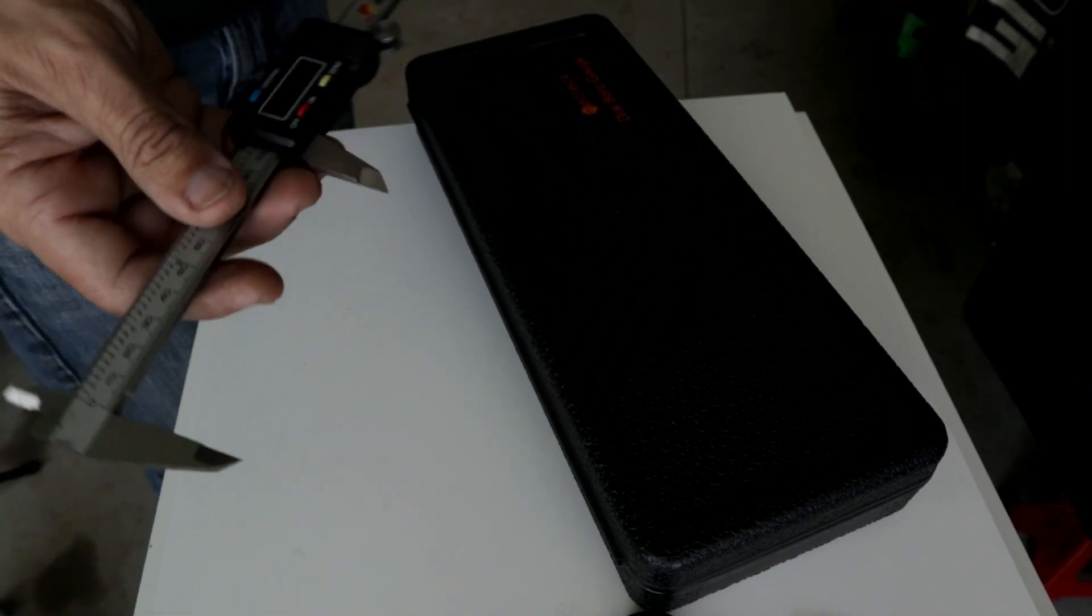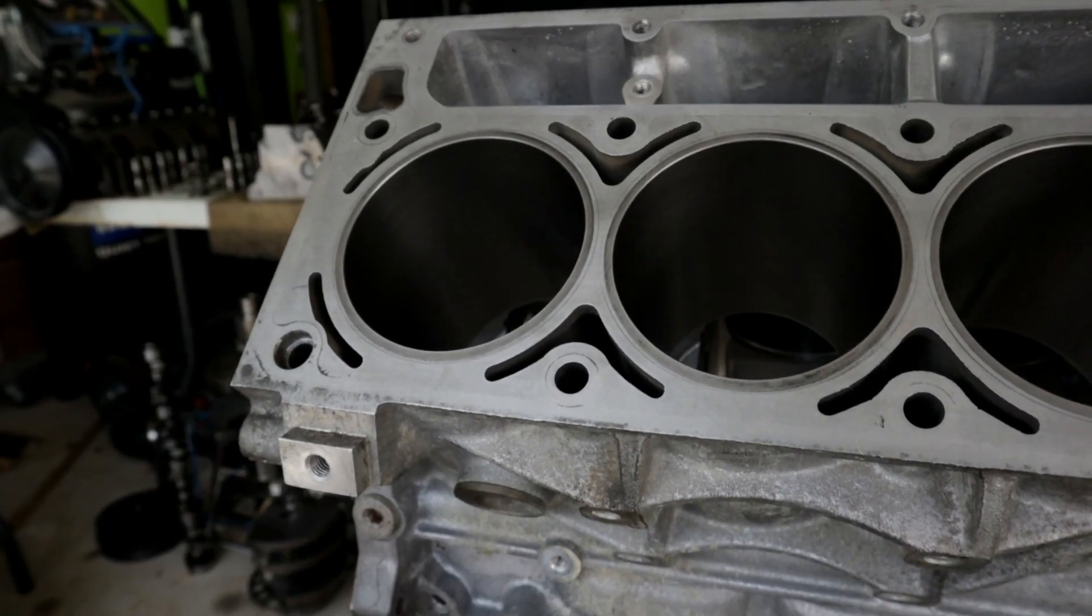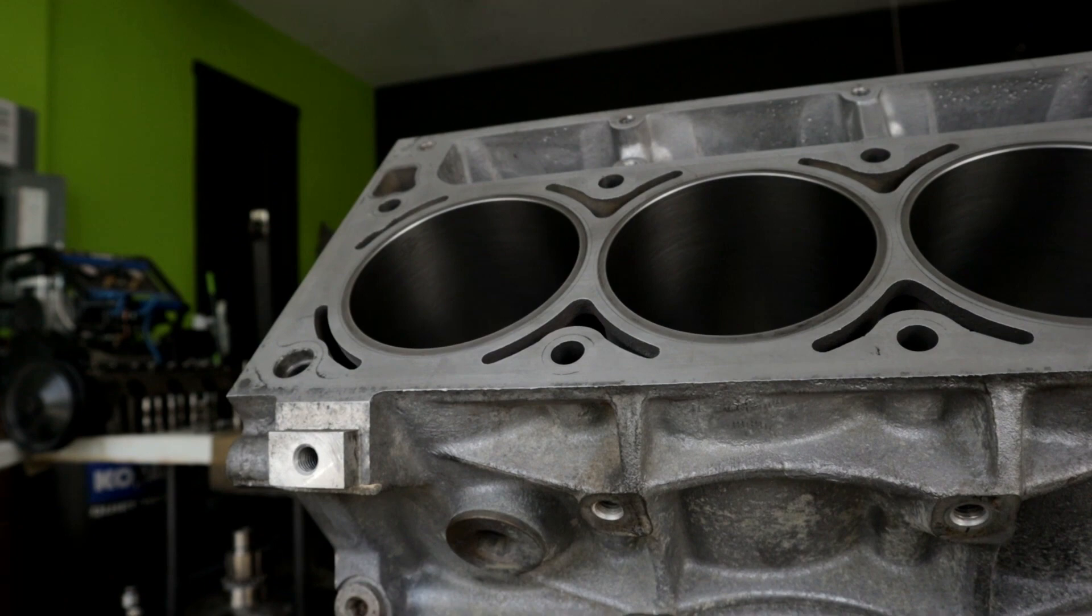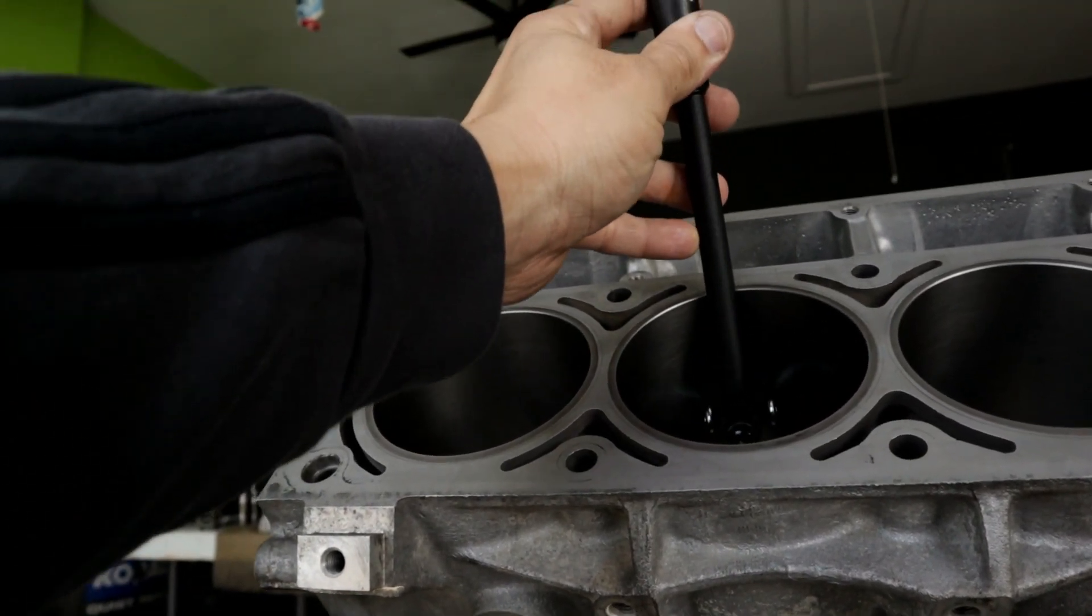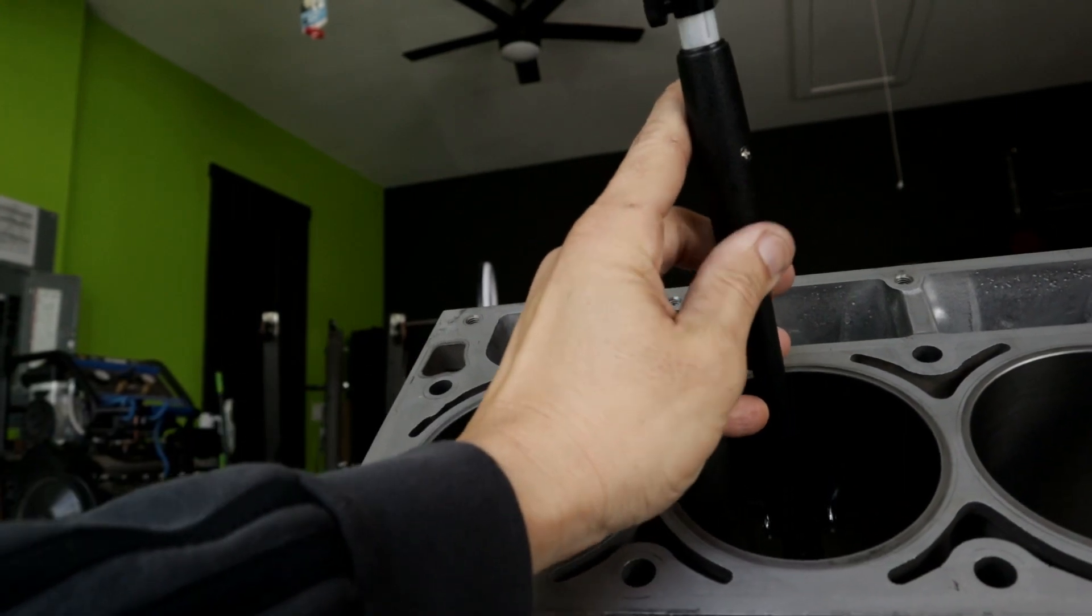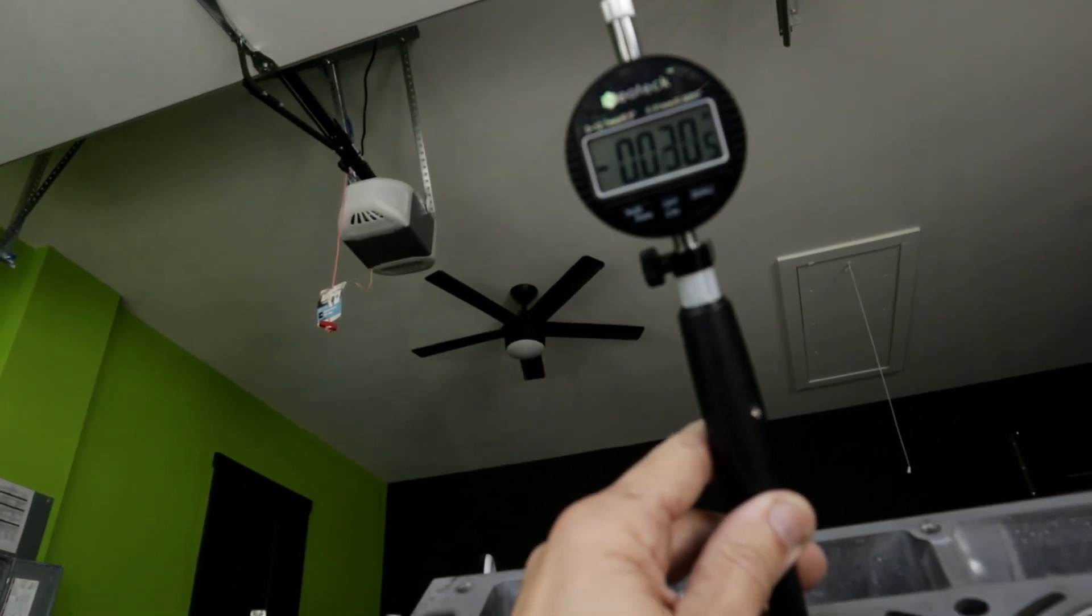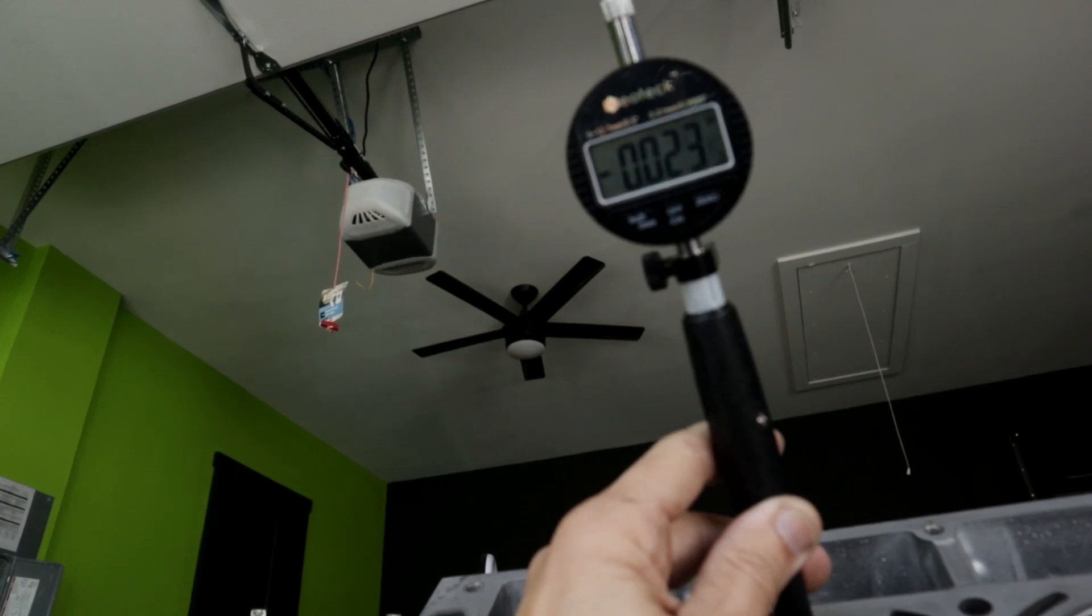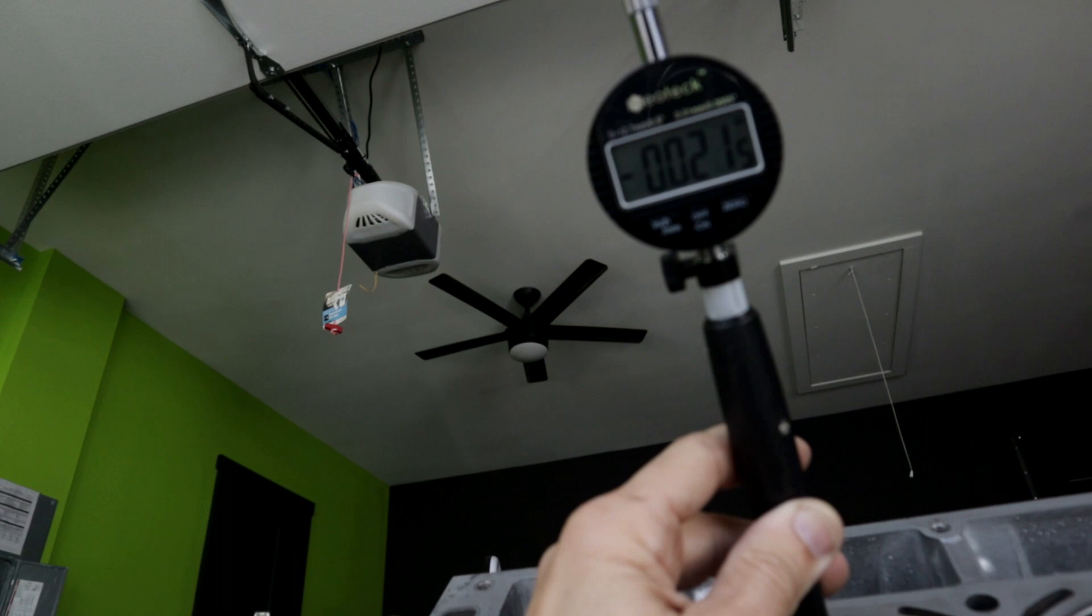Now that our dial bore gauge is set to 3.898, we can go to whatever bore you're trying to measure. In this case, it's going to be a cylinder bore for my engine block. What you want to do is insert it and push it back and forth until you find the highest number, which in this case is going to go to twenty thousandths of an inch.